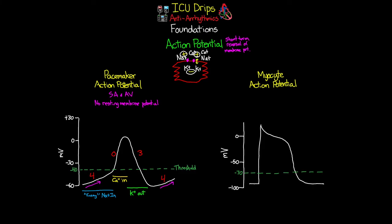This is a spontaneous process generated by nodal cells, but it can be significantly modified by external forces — autonomic nerves, hormones, drugs, ions, ischemia, and hypoxia can all influence this process and ultimately lead to changes in a patient's heart rhythm. The primary goal of pacemaker cells is to initiate the signal, which spreads through the conduction system and to neighboring cells through gap junctions.